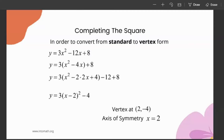Sometimes, in order to convert from standard to vertex form, we need to do a special process called completing the square. Say we have the standard form equation 3x squared minus 12x plus 8 and we want to convert it into vertex form. The first step is to common factor the leading coefficient out of the first two terms. The constant does not change. You'll get 3 times (x squared minus 4x). Then, within the bracket, you need to complete the square, which means creating a perfect square trinomial.